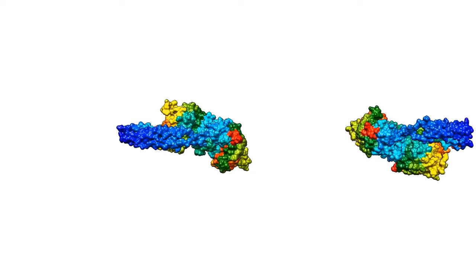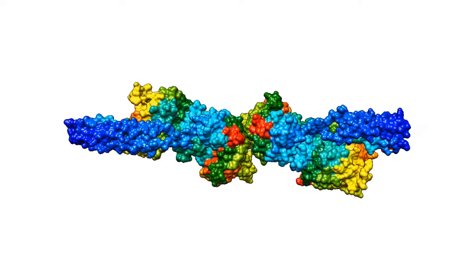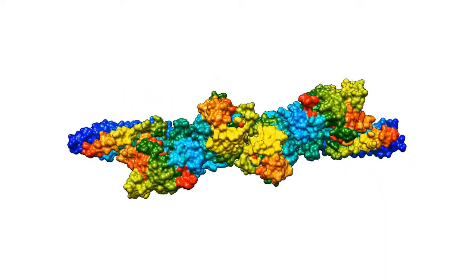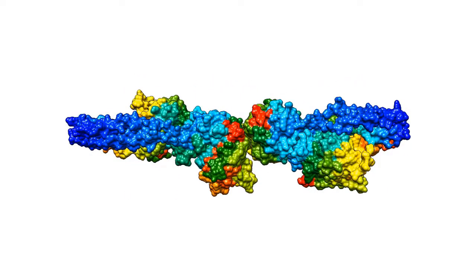Sometimes a protein cannot function without forming a complex, meaning multiple individual proteins come together as a single unit. In some cases, the proteins that come together are different kinds of proteins, and sometimes they're the same kind of protein.